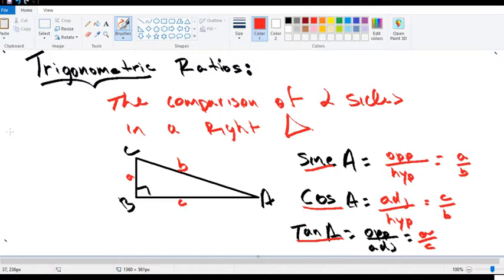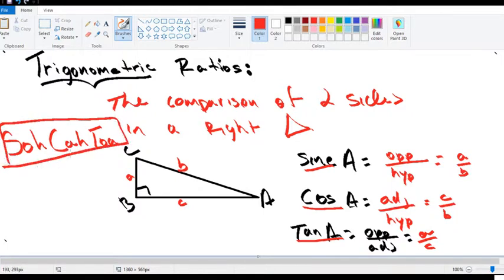There's a strategy that a lot of people utilize and it's called SOHCAHTOA. If you remember this strategy, the first letter is sine: sine is opposite over hypotenuse. Cosine will be adjacent over hypotenuse. And tangent will be opposite over adjacent.